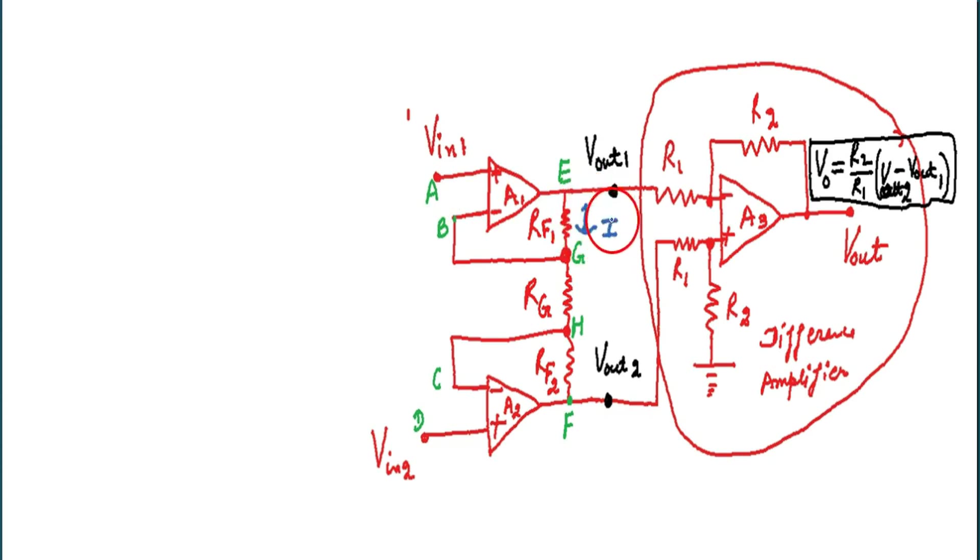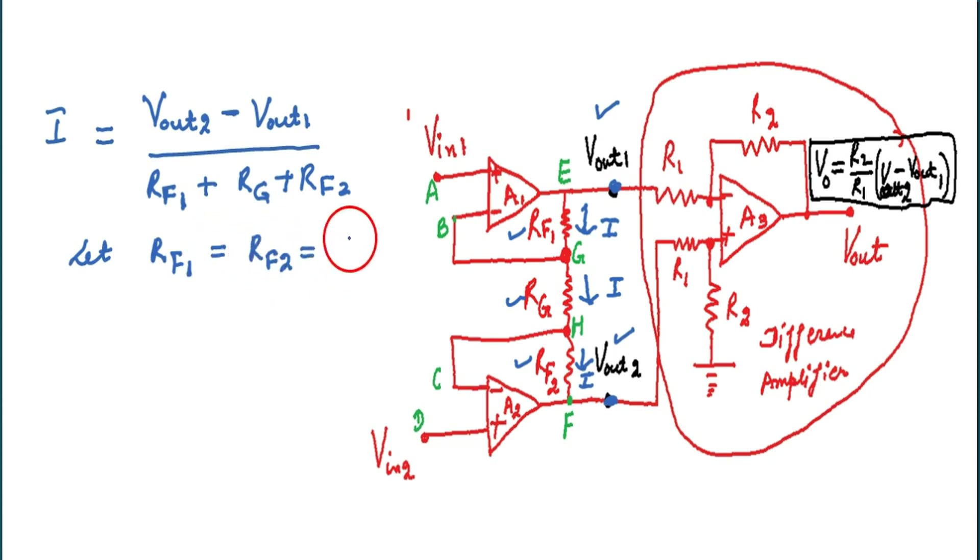The current flowing through the three resistors equal, that is I, because op amplifier input never draw any current. Now let we write the current I using the extreme points E and F, like at E and F, the voltages Vout2 and Vout1 divided by the three resistors, Rf1 plus RG plus Rf2. Now let Rf1 equals to Rf2 equals to Rf, then the equation modifies.